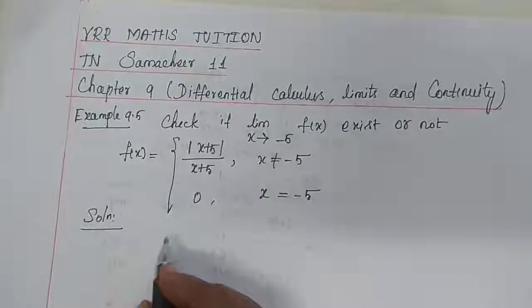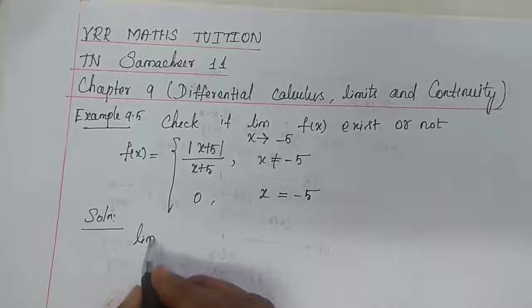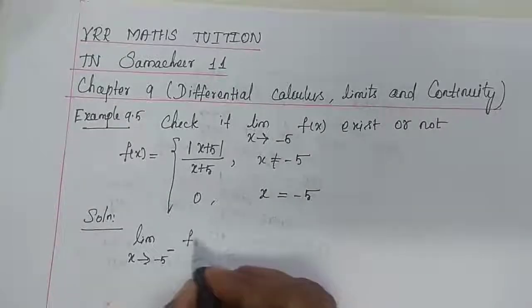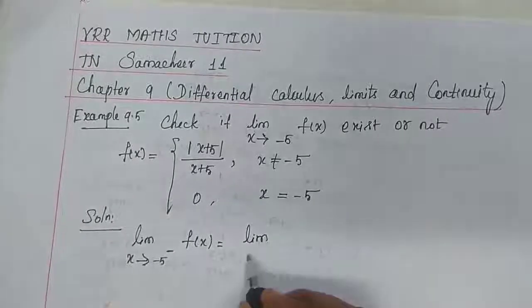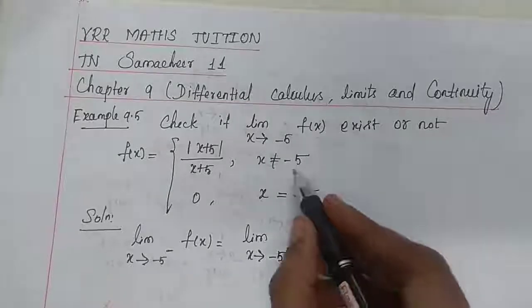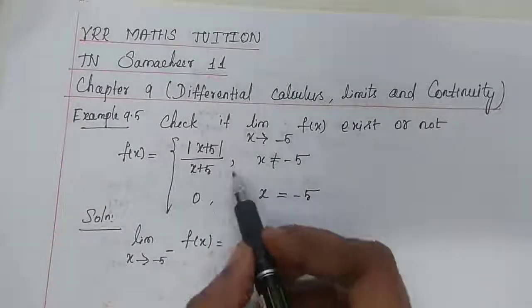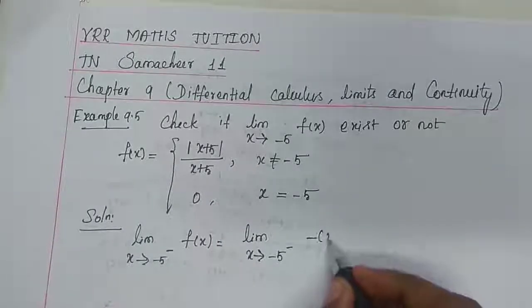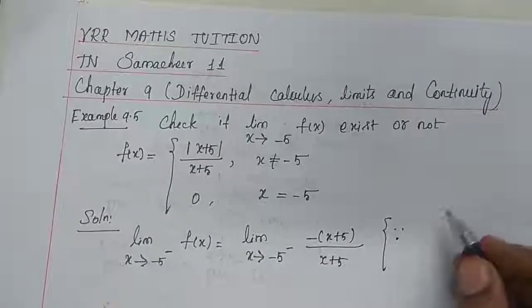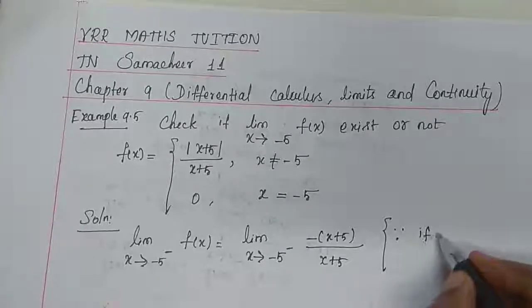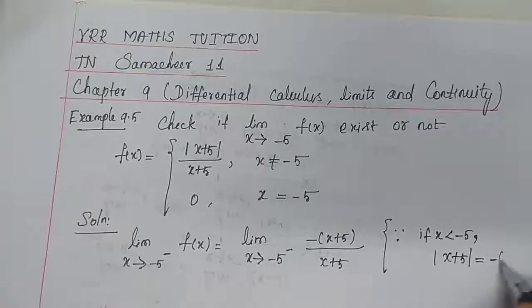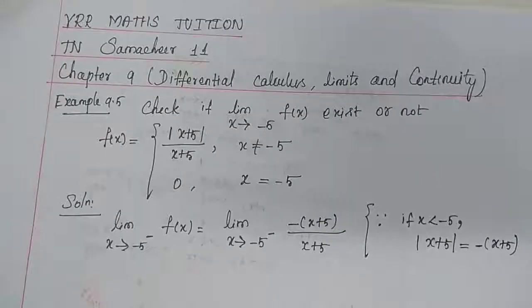Solution: To check existence, first find the left limit. Left limit = lim (x→−5⁻) f(x). Since x is approaching from the left of minus 5, x < −5, so |x+5| = −(x+5). Therefore, f(x) = −(x+5) / (x+5).